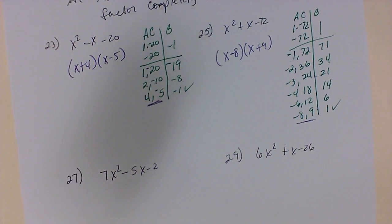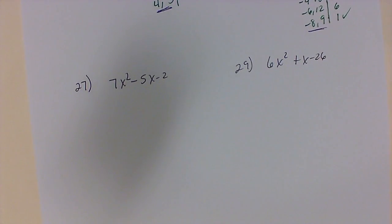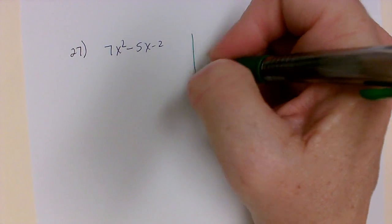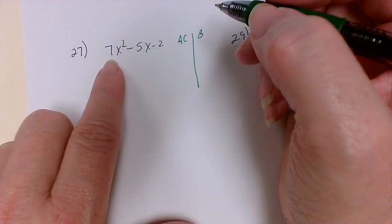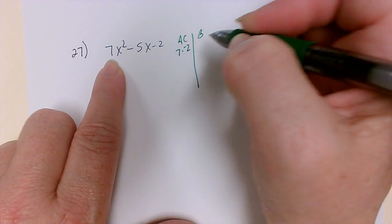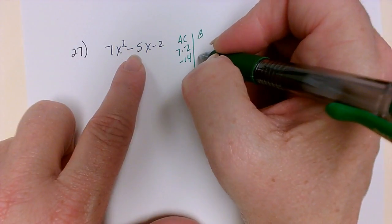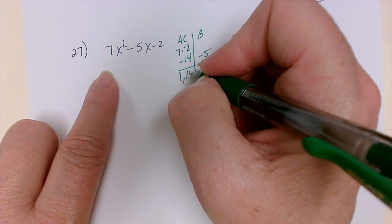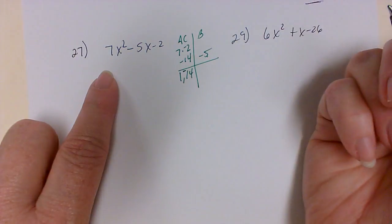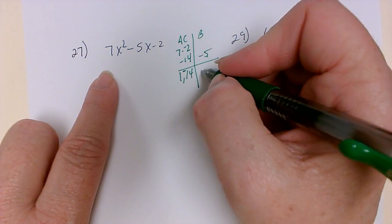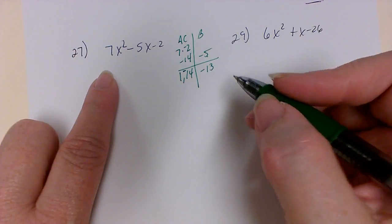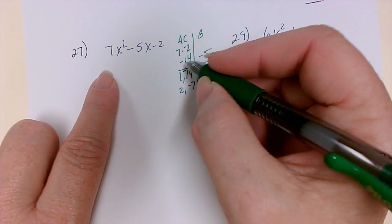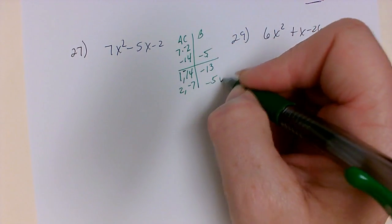Now what happens if we don't have a 1 out front? We have to do it a little differently, but we're still going to use our AC method. So a times c getting us to b — in this case we have 7 times negative 2, which gives us negative 14, trying to get to negative 5. Because b is negative, the 14 is negative: 1 times negative 14 is negative 14; add them, get negative 13. Then 2 times negative 7 gives me negative 14; add those, I get negative 5 — that's what I'm looking for.